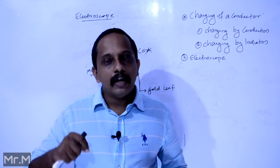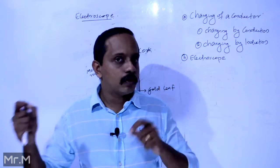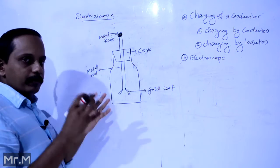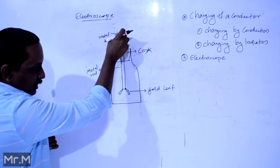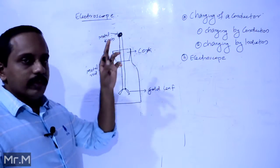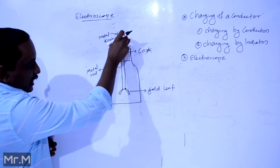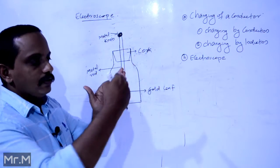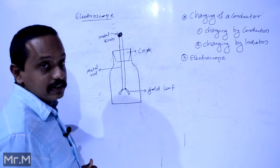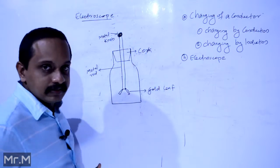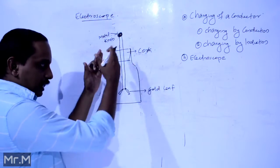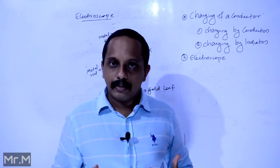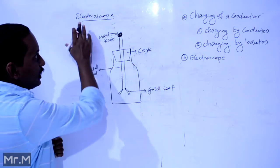An electroscope is a device used to identify whether an object is charged or not. It consists of a metal knob, a metal rod, and a gold leaf in a V-shape which shows divergence. It also has a rubber cork and a glass jar enclosure to prevent air currents from affecting the gold leaf.